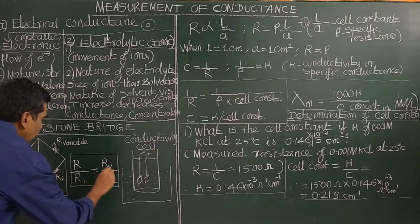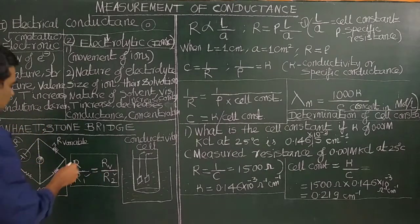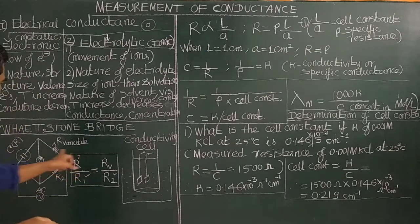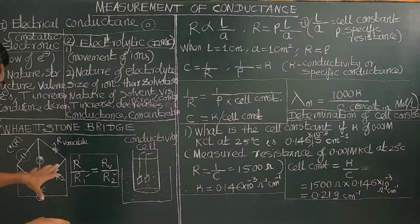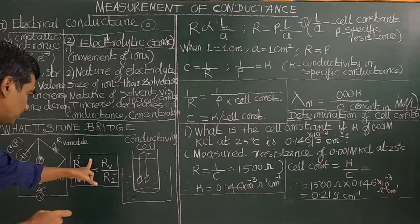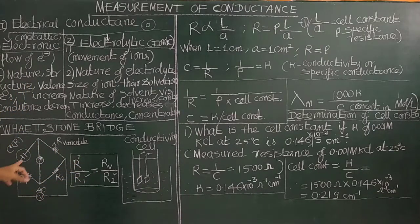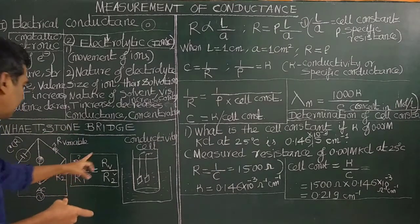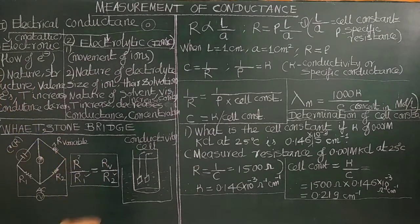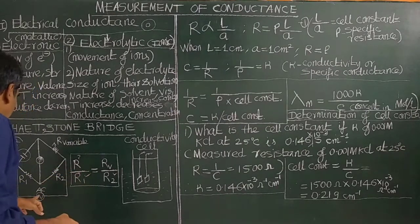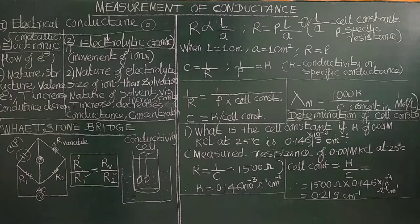When there is no deflection and no current through the galvanometer, this relationship is applied: R1/R2 = R3/R4. The variable resistance is varied so that there is no deflection and no current. Under that condition, this relation is applied and now we can measure the resistance.